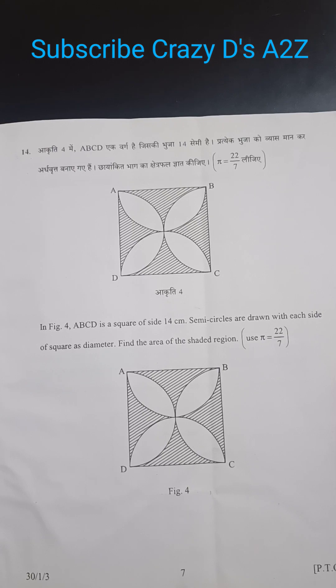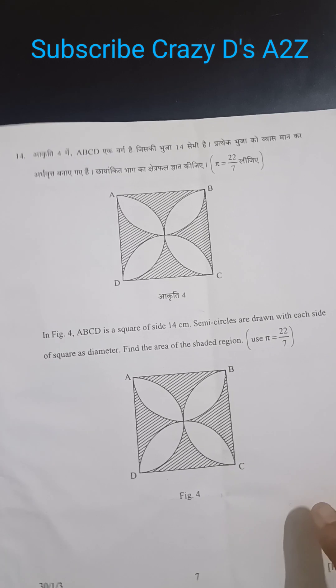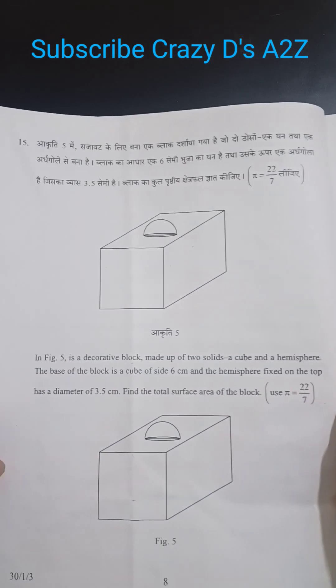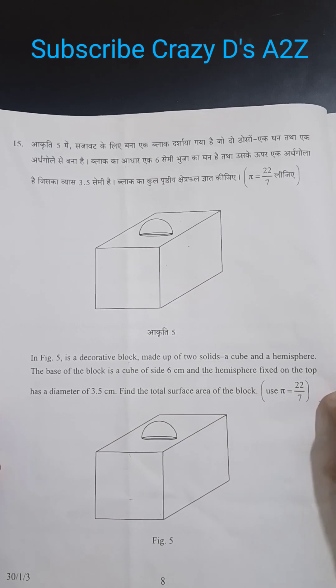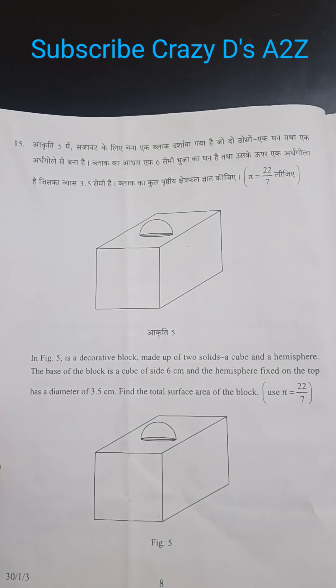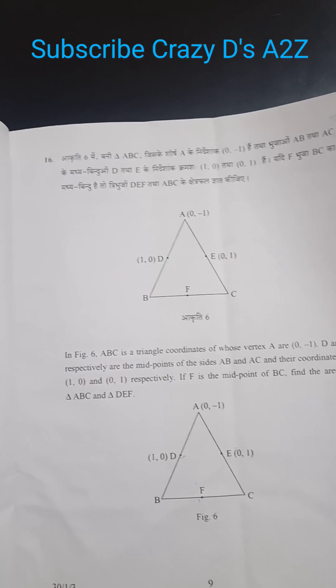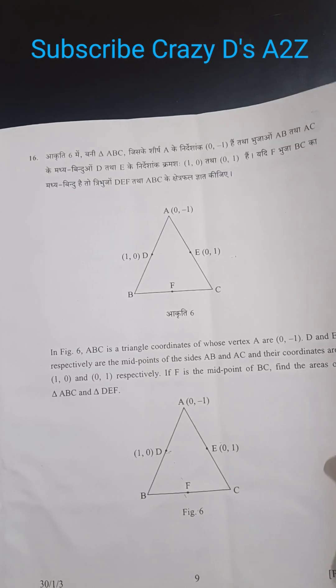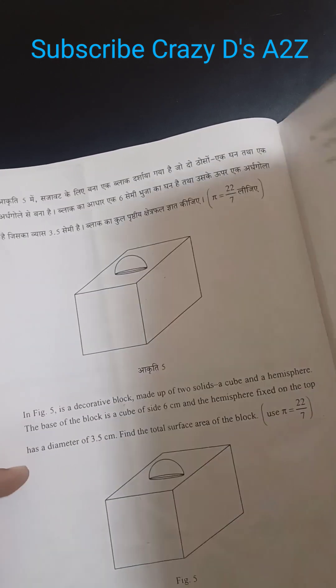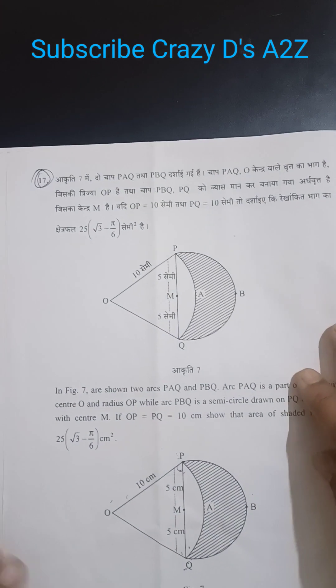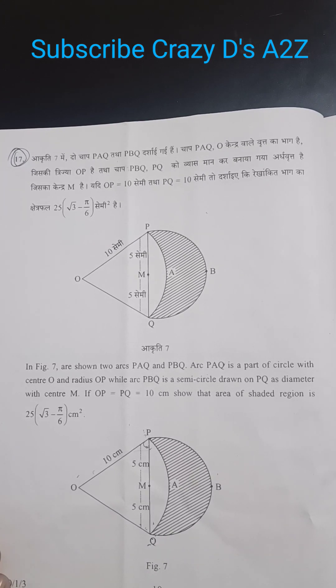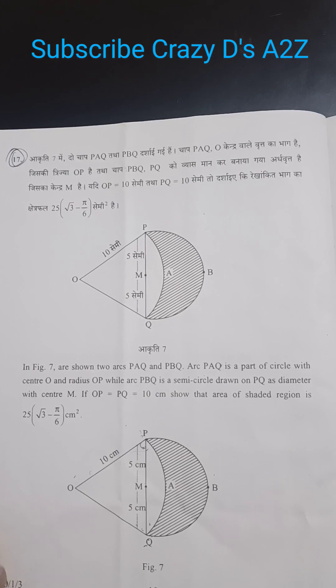I am just turning the paper slowly so that you can easily go through. Then this is question 15. Sorry, this is question 15. This is question 16. This is question 17. These are little big questions but they are easy to solve.